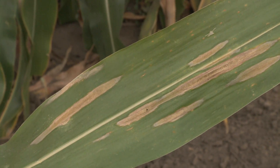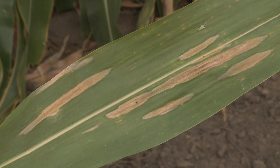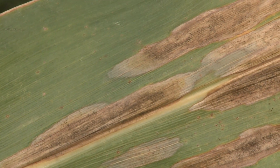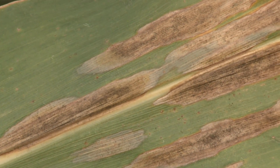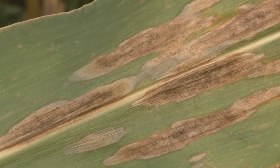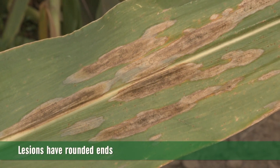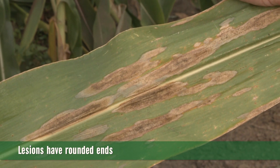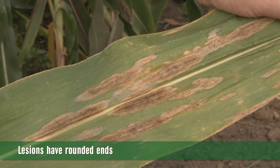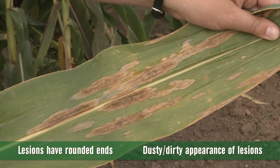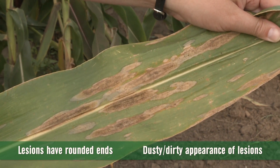Usually they're going to be parallel to the leaf itself and the margins, and it might look similar to some other diseases that you've seen — maybe some bacterial diseases like Goss's bacterial wilt and blight or Stewart's wilt. But it's important to notice the rounded ends on the lesions and that the middle of the lesions might look dusty or a little bit dirty, and that's because of the large quantities of fungal spores produced by this fungus in the middle of those lesions.